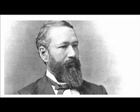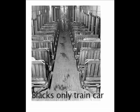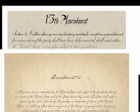Homer Plessy was seven-eighths white and one-eighth African American. For most states he passed for white, but for the state of Louisiana he was considered an African American. On June 7, 1892, Plessy purposely sat in the whites-only streetcar and identified himself as black. He was arrested and his case was taken to the Supreme Court. He argued that this was a violation of the 13th and 14th Amendment. The Supreme Court stated that it wasn't, and separate but equal was indeed legal.